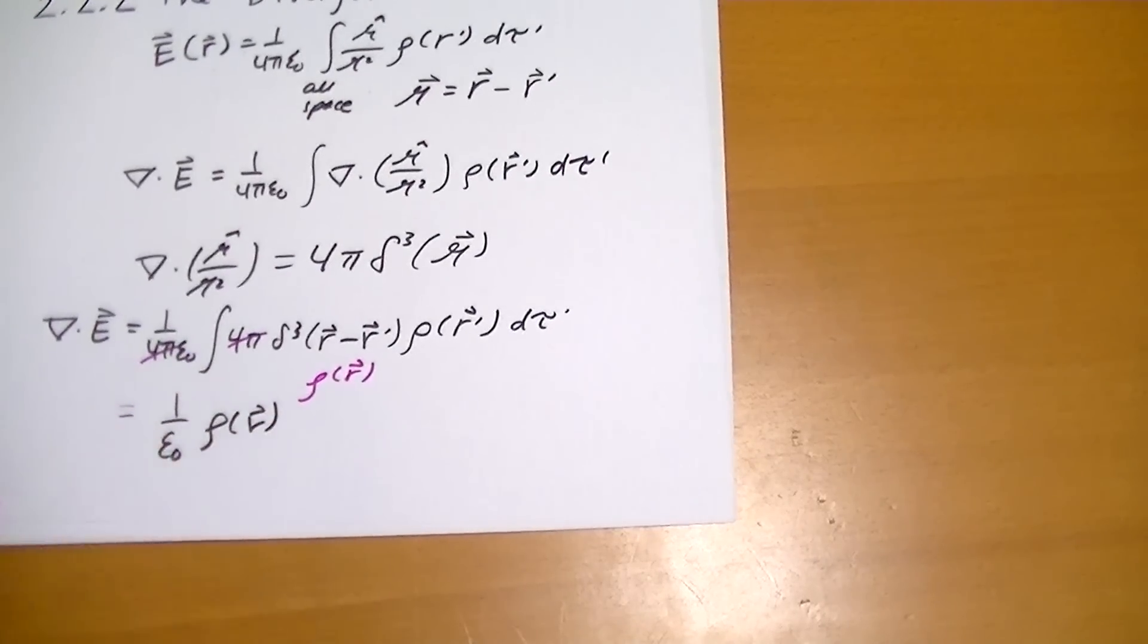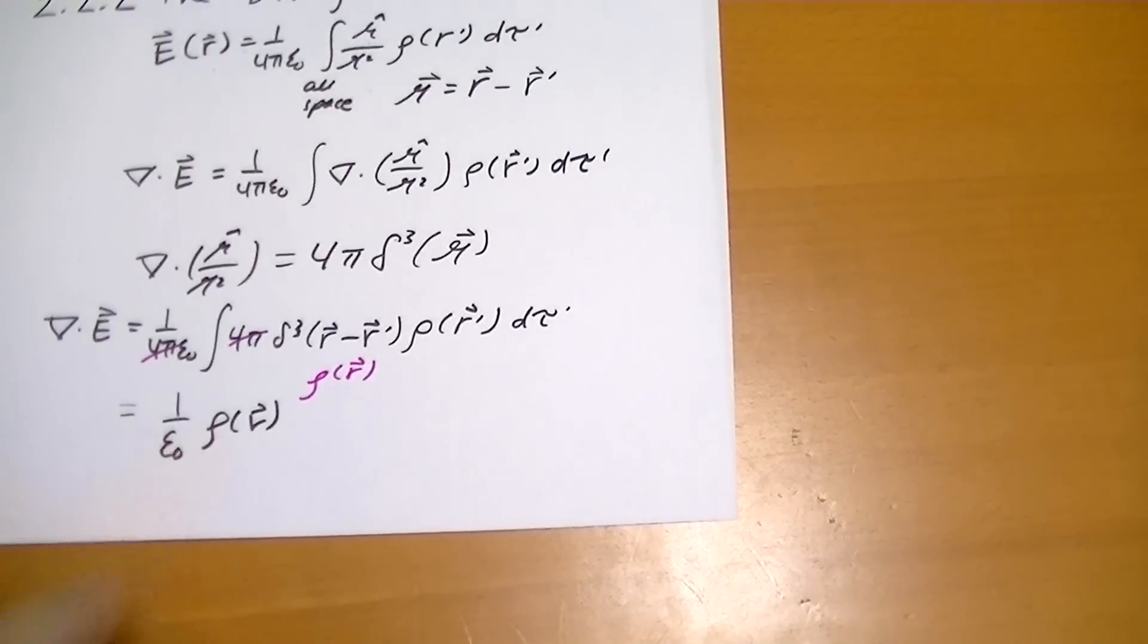So the divergence of the electric field is just equal to 1 over epsilon-naught of the charge density at that point, which is exactly what we found using our geometrical methods.